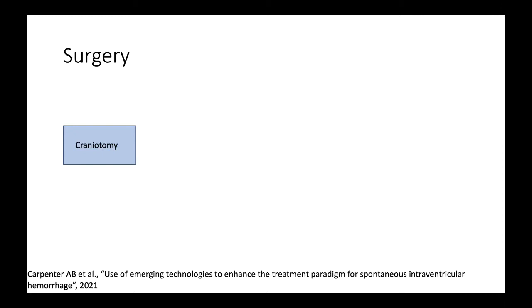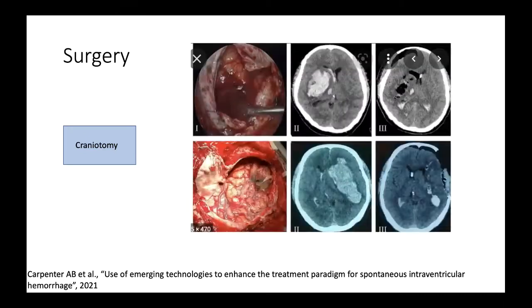Surgery for ICH is continuing to evolve. The main trials like STITCH were largely based on craniotomy — taking the bone off, opening the dura, suctioning the clot out, and putting the bone back — or craniectomy with clot evacuation leaving the bone off for decompression. This is still a useful life-saving tool, but it's not how people are treating ICH these days. The guidelines are largely based on these two older modalities.